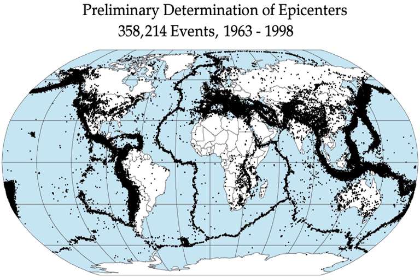Subsequent scales have retained a key feature, where each unit represents a 10-fold difference in the amplitude of the ground shaking, and a 32-fold difference in energy. Subsequent scales are also adjusted to have approximately the same numeric value within the limits of the scale. Standard practice by most seismological authorities is to express an earthquake's strength on the moment magnitude scale, which is based on the actual energy released by an earthquake.